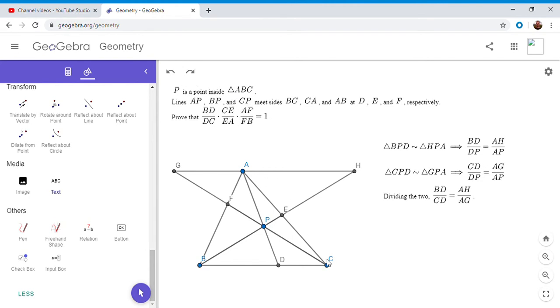So next, we want to find CE over EA. But those are corresponding segments of these two similar triangles, BCE and EAH. So we have triangle CEB is similar to triangle AEH. And therefore, CE over EA is BC over AH.